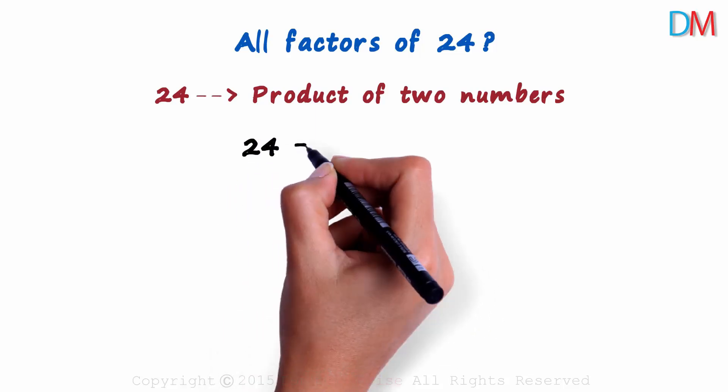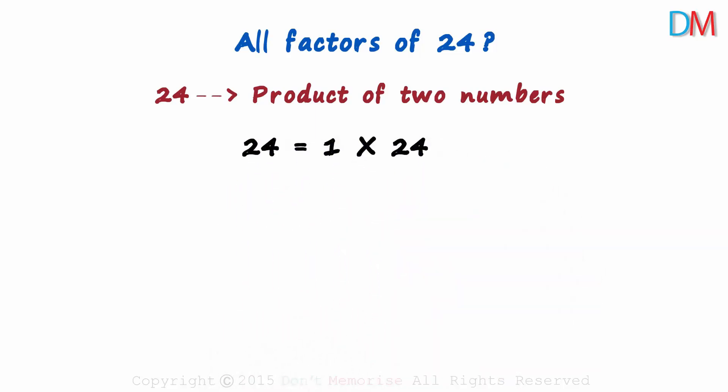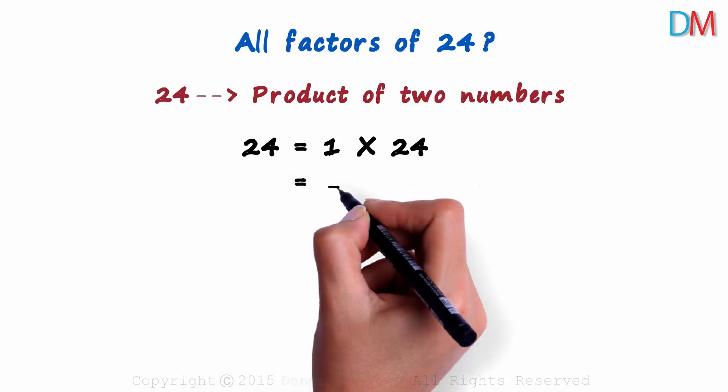How do we write it as a product of two numbers? Let me give you an example. It can be written as 1 multiplied by 24. We have written 24 as a product of two numbers. But remember, we have to think of all possible combinations.